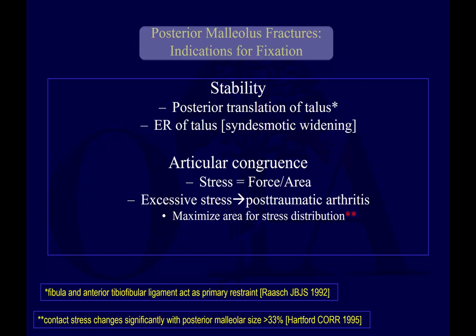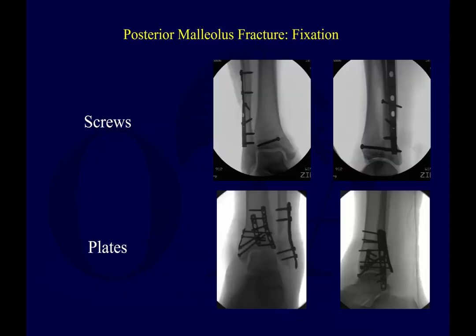The other indication is articular congruence. If the talus is not in contact with a large portion of the tibia, you increase contact stresses on the remaining area, and that excessive stress can lead to post-traumatic arthritis. The number cited is 33%, though that's somewhat questionable and the concept of increased stress remains the key point.